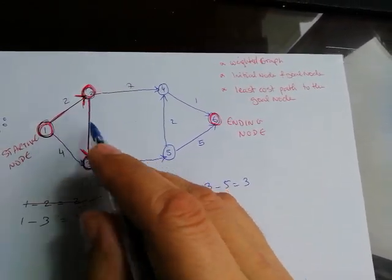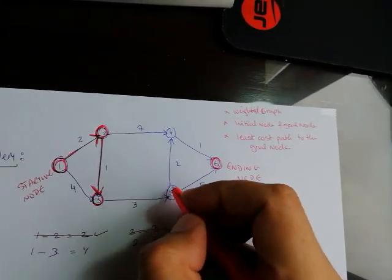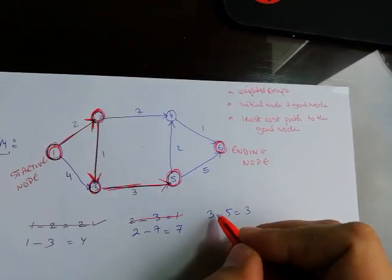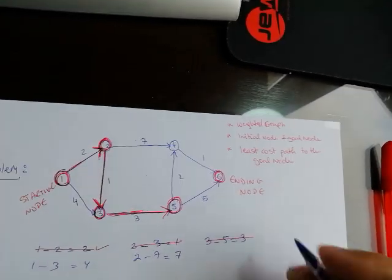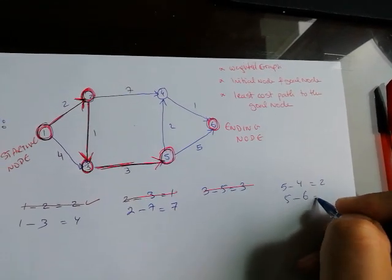We can't go anywhere else, we can't go back. So three to five is three, and we select the minimum out of all of them, so five. Then we do five to four and five to six.